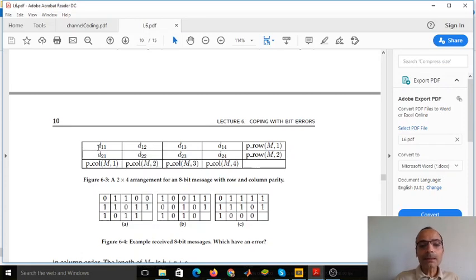There are eight message bits that are arranged in this rectangular array, but then the procedure of encoding each row and each column using an SPC code is exactly the same as in product code. So you can see that there are a total of six parity bits that are getting introduced here.